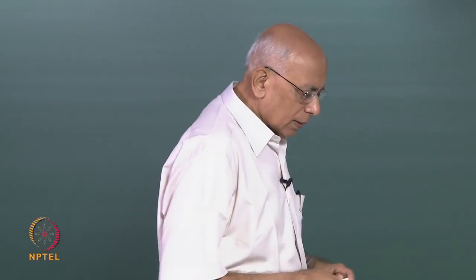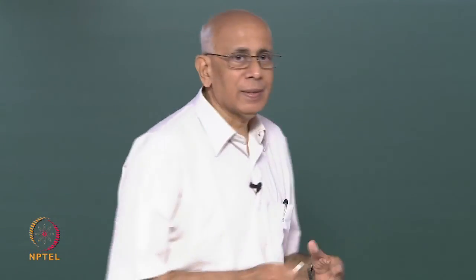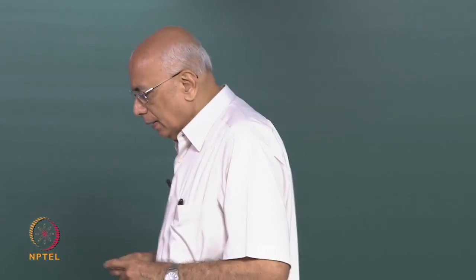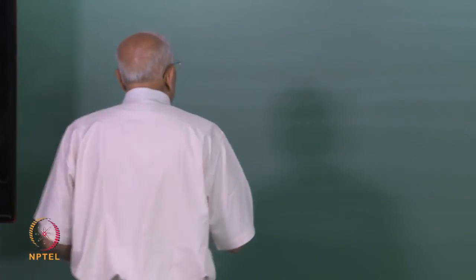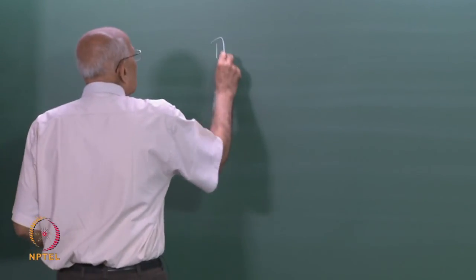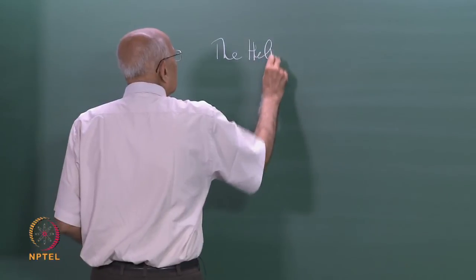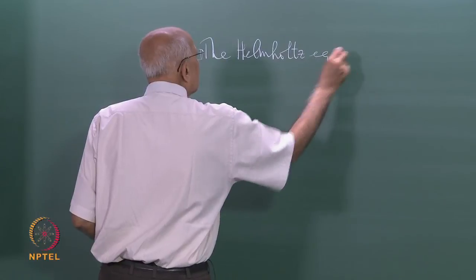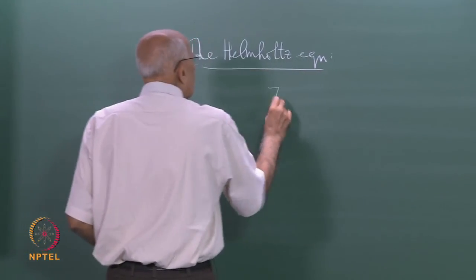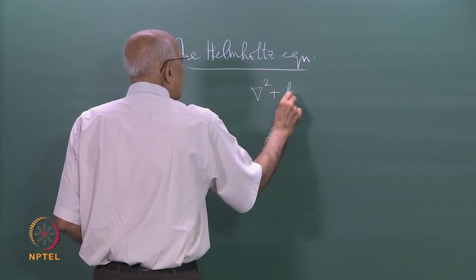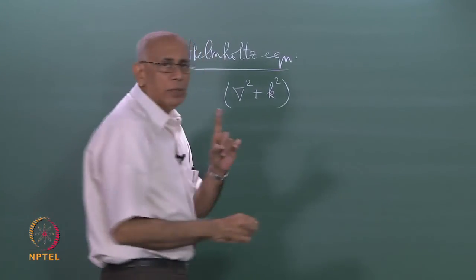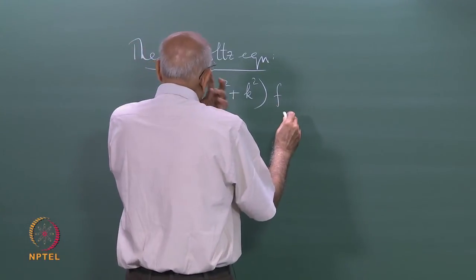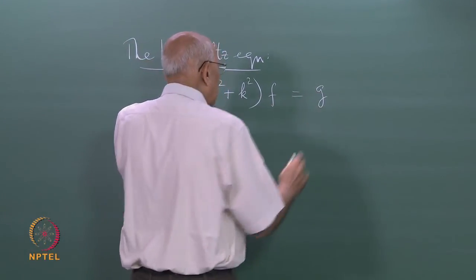Today, let us begin the study of the next in the sequence of partial differential equations of physics. This is the Helmholtz equation and the equation itself is very simple, which is of the form del squared plus k squared. The inhomogeneous Helmholtz equation is something like del squared plus k squared of u equal to some given function g.